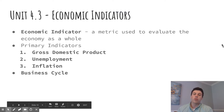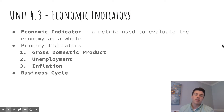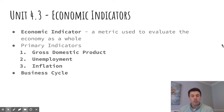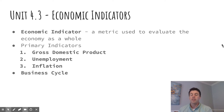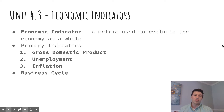Hey, video 4.3. We're going to look at economic indicators today — any type of metric used to evaluate the entire economy. We're going to focus on three main ones: gross domestic product or GDP, unemployment, and inflation. We're going to go in depth on each of those three today, and we're also going to take a minute to look at the business cycle and how that impacts the economy as well. So let's dive right in.